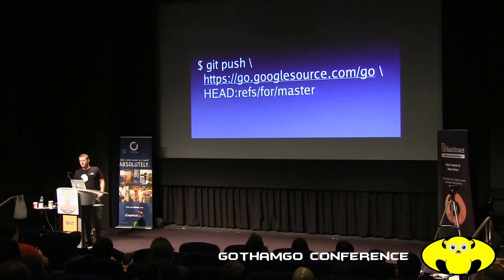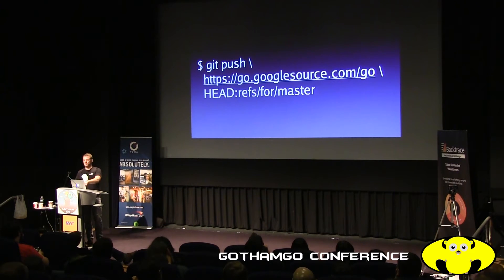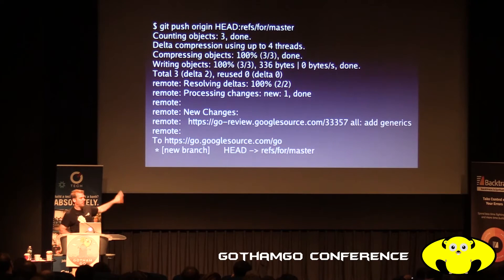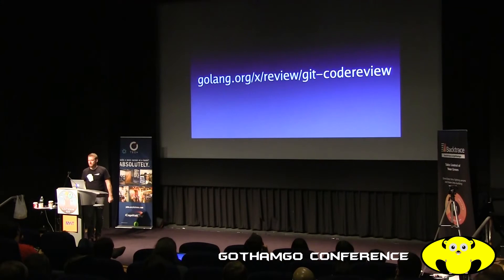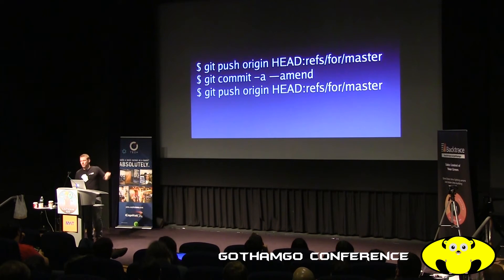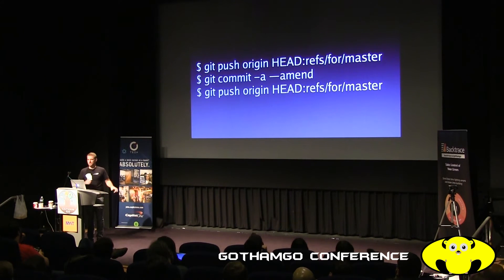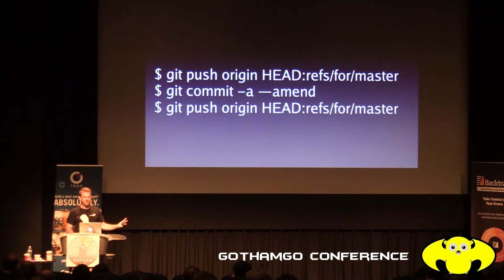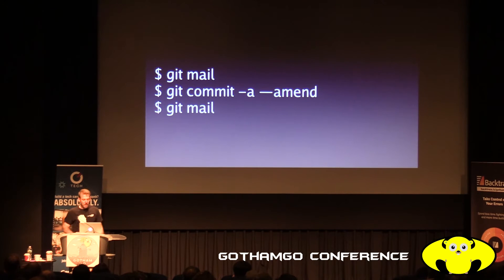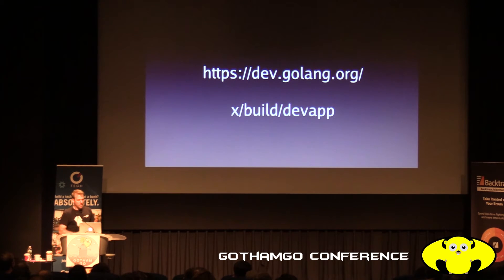The CLA is very readable but people don't like signing it — necessary evil. To send a code review, you push whatever's in your Git tree to refs/for/master, which is a magic ref on our Git server that outputs something to stderr and tells you here's your review. We have a tool called git-code-review that you can go-get, so instead of typing all that, when you're iterating on your code review and reacting to feedback, you can type a shorter command.